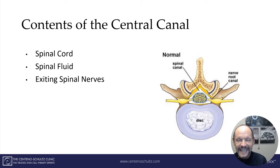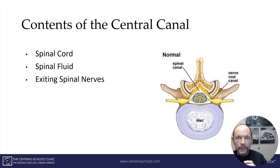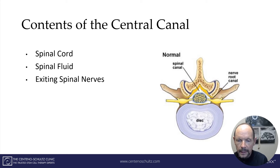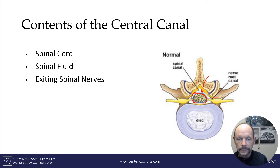What's contained in this canal is critical, and it's basically three things: the spinal cord, spinal fluid that goes around the cord, and the exiting nerve roots. You can see this — this is the canal, and inside is the cord, then the white fluid, and the exiting nerve roots.